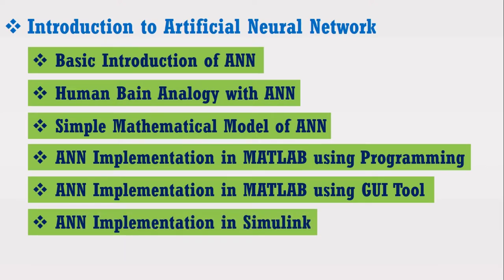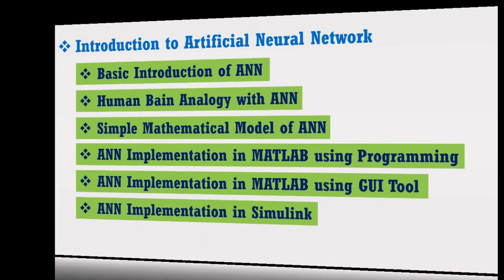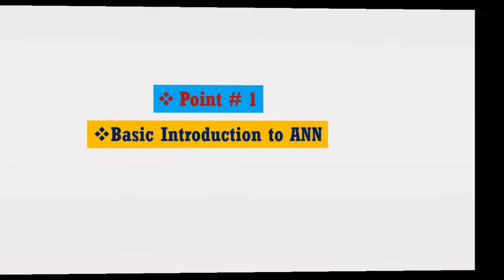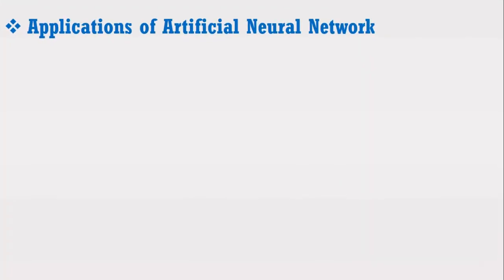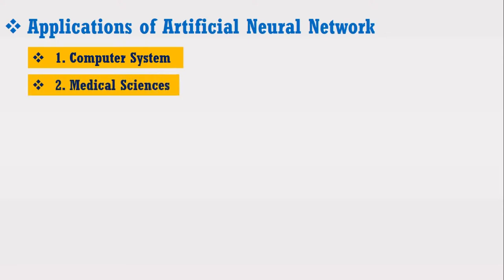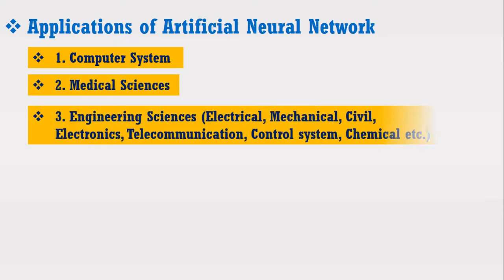Now I am going to discuss the basic introduction of the ANN. Before starting, I want to tell you that the subject artificial neural network has very large applications in different areas such as computer systems, medical sciences, and engineering sciences including electrical, mechanical, civil, electronics, telecommunication, control system, chemical, etc.